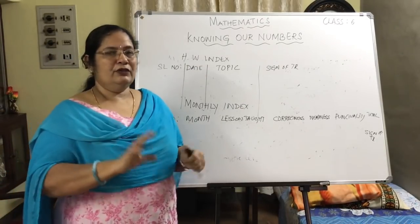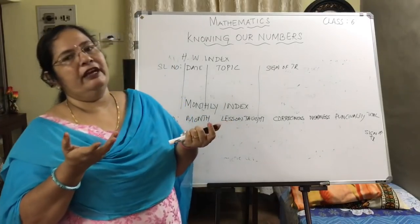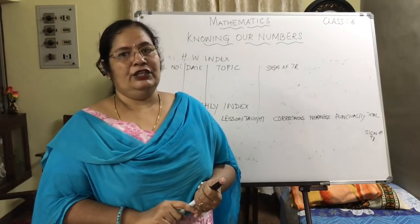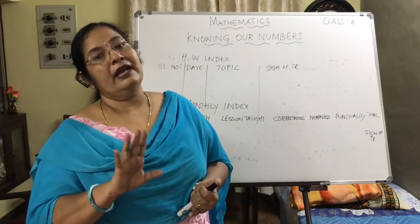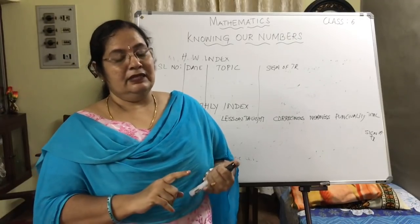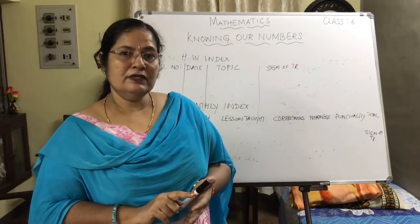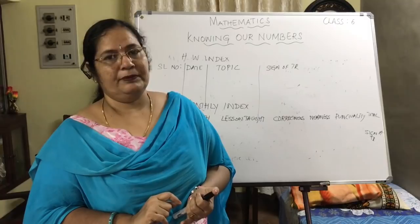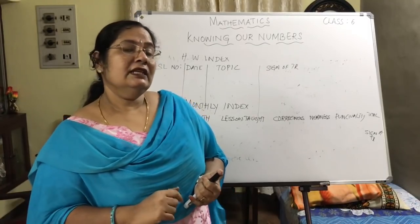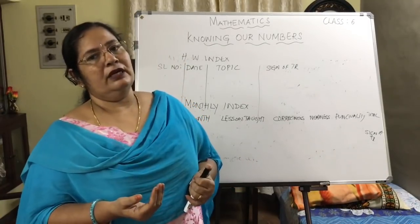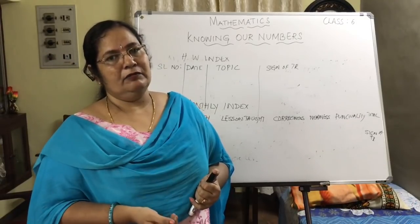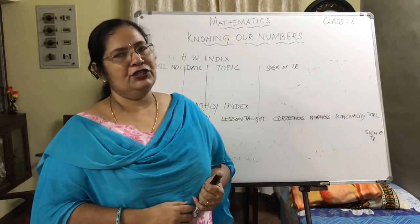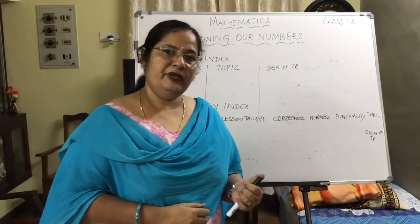So in a nutshell, today we have learned about the Indian system of numeration — four periods and nine places. The periods are ones, thousands, lakhs, and crores. The places are ones, tens, hundreds, one thousand, ten thousand, one lakh, ten lakh, one crore, and ten crore. We also saw how to write the number name and the numeral in the Indian system of numeration. Thank you, my dear children.